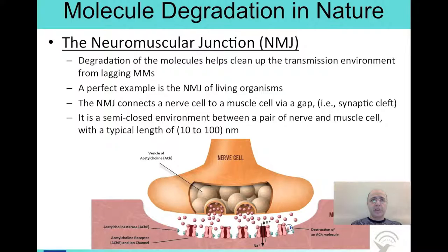One well-known use of degradation in the molecular communication process in nature takes place in the neuromuscular junction — the gap where the neuron meets the muscle cell, called the synaptic cleft. As you can see in the figure, the synaptic cleft is between the neuron and the muscle cell. The synaptic cleft is a closed environment surrounded by the myelin sheath. The nerve cell releases neurotransmitter molecules called acetylcholine. When the acetylcholine molecules bind on the acetylcholine receptors, they cause the ion channel to open.